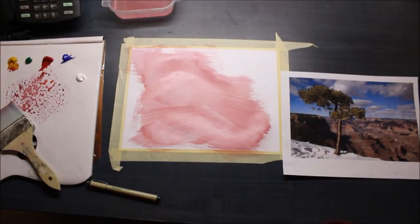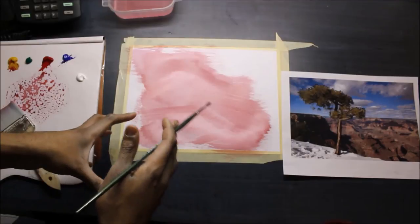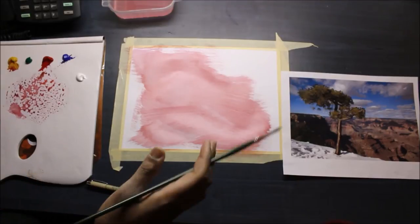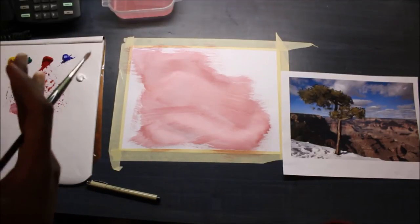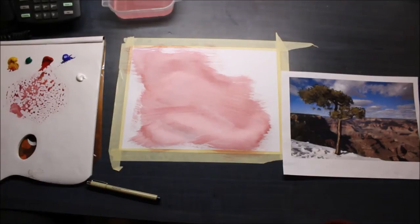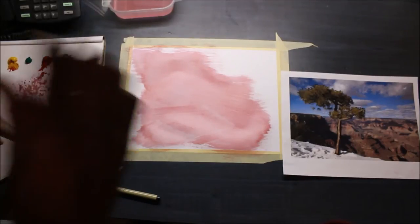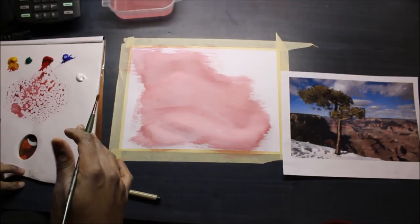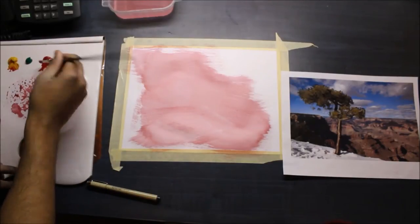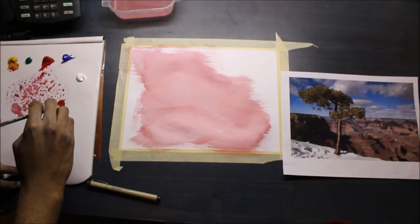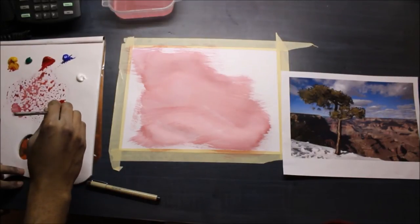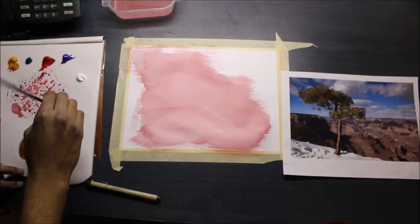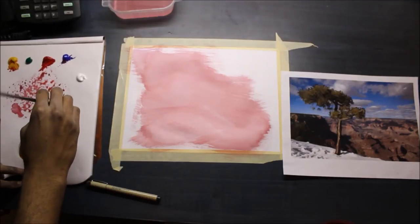So what we're gonna do next is draw an outline for the tree. You want to do the outline using the darkest color because the Group of Seven, when they painted, their darks were painted first and then lights on top. For the dark tones, I see them as almost like a really dark red, so I got my red here and I'll add some blue and finally a little bit of green.